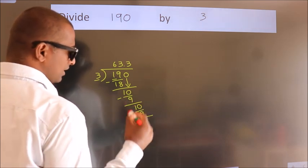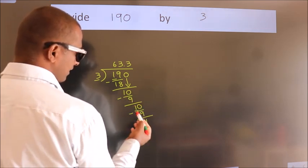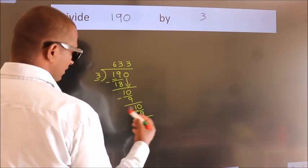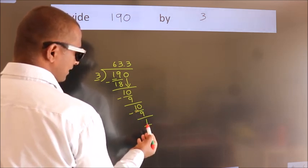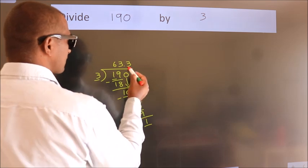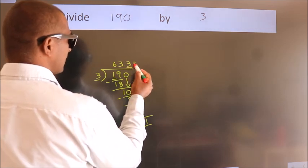Now, you observe. We had 1 here, and we got 1 again. That means this number keeps on repeating.